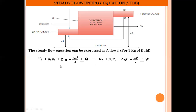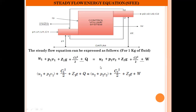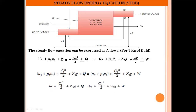By rearranging the terms, we write: (U1 + P1V1) + C1²/2 + Z1·g + Q = (U2 + P2V2) + C2²/2 + Z2·g + W. Here the plus sign on Q indicates heat is added to the system, and the plus sign on W indicates work is done by the system. Now, since U + PV is nothing but enthalpy H, by replacing U1 + P1V1 with H1 and U2 + P2V2 with H2, the equation becomes: H1 + C1²/2 + Z1·g + Q = H2 + C2²/2 + Z2·g + W.